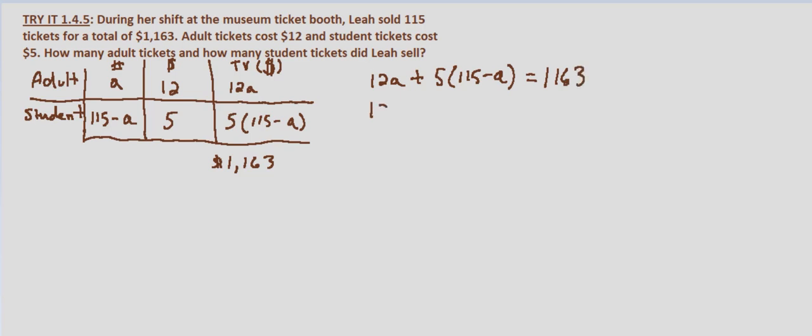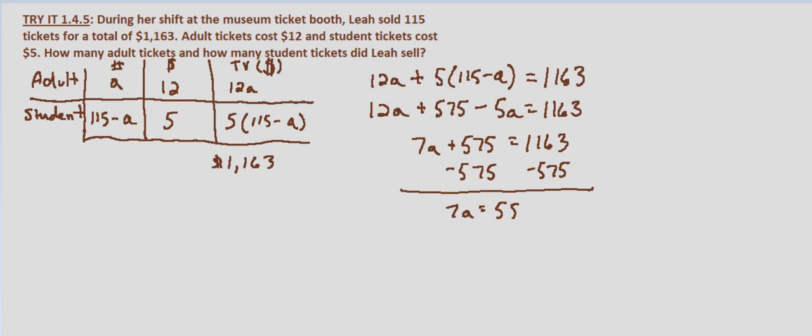So we distribute the 5. 12A plus 5 times 115 is 575, minus 5 times A is 5A. Combine like terms: 12 minus 5 is 7A plus 575 equals 1163. Subtract 575 from both sides, and 7A equals 588. We divide both sides by 7 and we get A, the number of adult tickets, is 84.